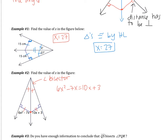The second way is to look for congruent triangles. I notice I have a pair of congruent angles, a pair of right angles, and this reflexive property in the middle. That tells me that the triangles are congruent by AAS. Therefore their corresponding parts are congruent, and I get 6x² − 7x = 10x + 3. Either way, I end up with the same equation.